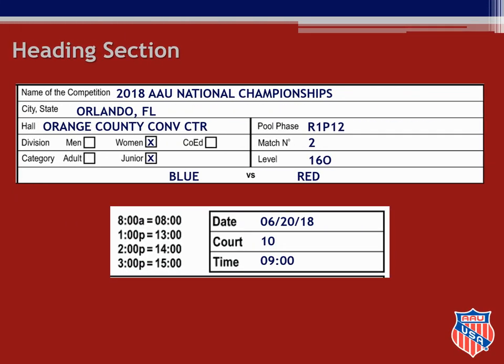When you first arrive at the score table you will check to see if the heading section of the score sheet is already filled out. Many tournaments pre-print the heading information. If not, you will want to complete this information in either blue or black pen making sure that all entries are written in capital letters. For the match in this clinic the name of the competition is 2018 AAU National Championships.